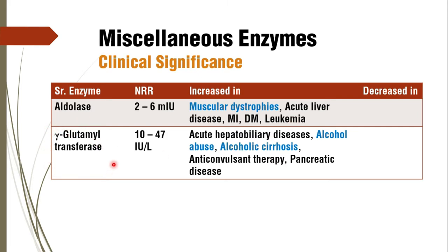Coming to gamma glutamyl transferase activity. Because it is a liver enzyme, it is increased in acute hepatobiliary disorders, alcoholic abuse, cirrhosis, anticonvulsant therapy, and pancreatic diseases. But its rise in alcohol abuse and alcoholic cirrhosis is more clinically significant, because it correlates with the degree of alcohol abuse — the damage caused due to alcohol abuse is correlated with the rise in gamma glutamyl transferase. This makes it specific for alcohol abuse and the degree of liver disease caused by alcohol.